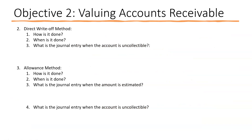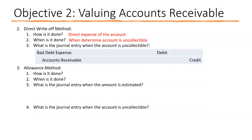Now let's look at how the write-off methods actually work. The direct write-off method, though non-GAAP, is important to understand. When you determine an account is uncollectible, you directly expense it. The journal entry is a debit to bad debt expense and a credit to accounts receivable — removing the receivable from your books and recording the expense.